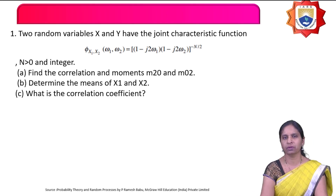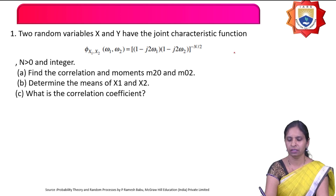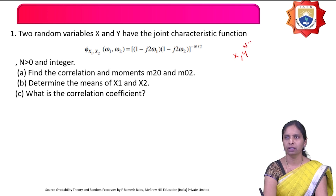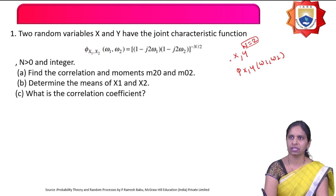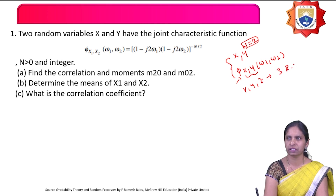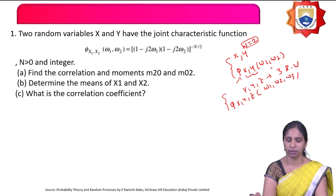In the previous lecture, we have already discussed about the joint characteristic function and the joint moment generating function. The joint characteristic function requires more than one random variable. For two random variables, it is represented as φ_x1,x2(ω1, ω2). For three random variables x, y, z, it is represented as φ_xyz(ω1, ω2, ω3). We can define the joint characteristic function for two or more random variables.